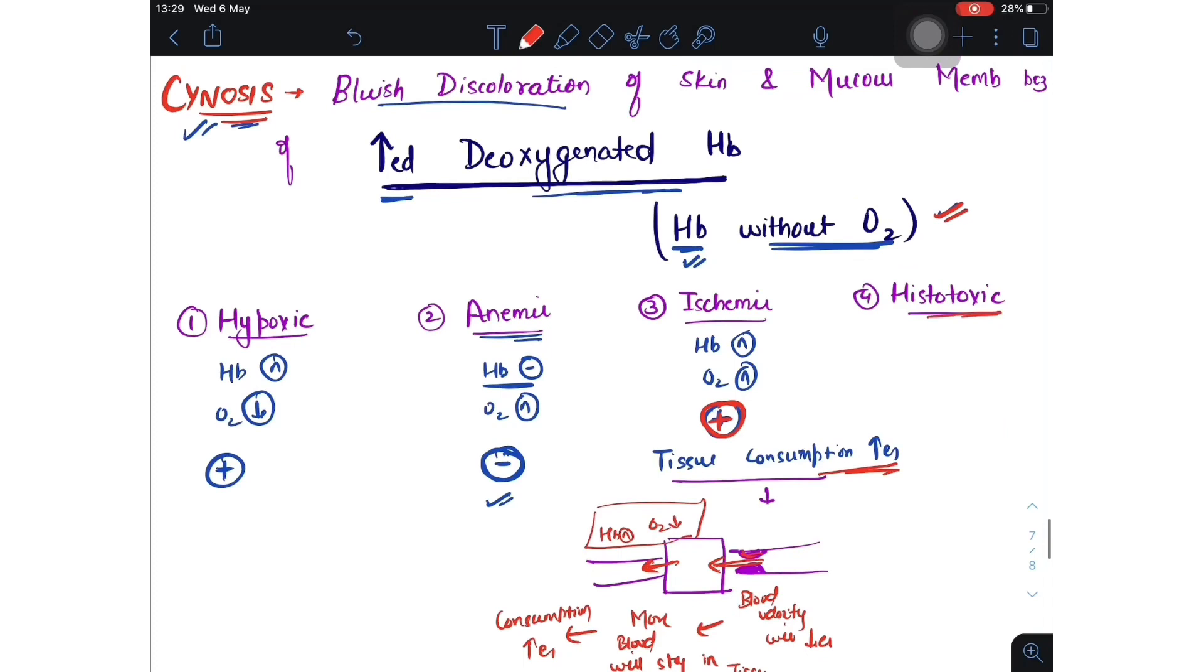And in histotoxic, hemoglobin is normal, O2 is normal, but tissue consumption is decreased. So we cannot see hemoglobin without O2 because there is no tissue consumption. So here we cannot see cyanosis.